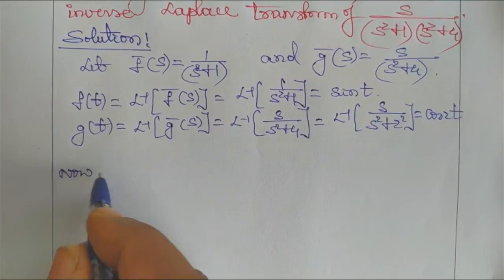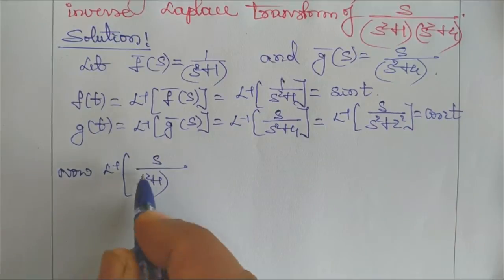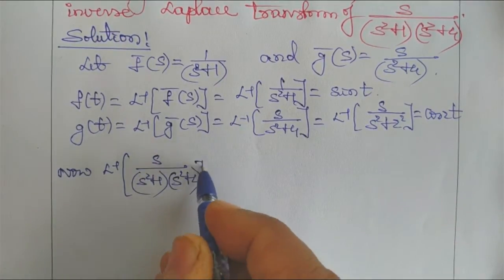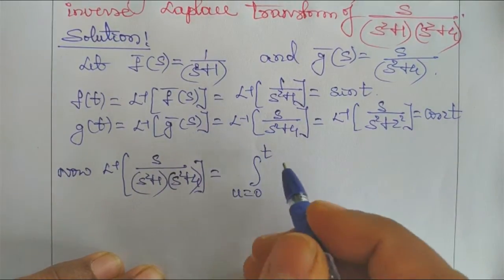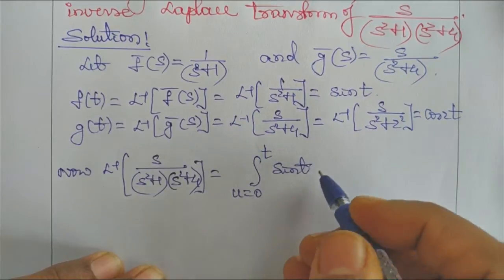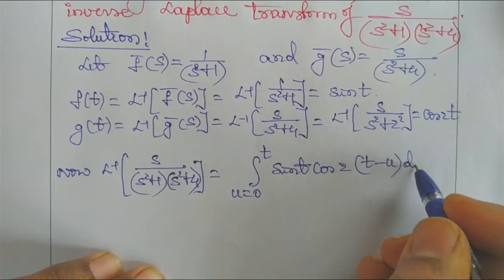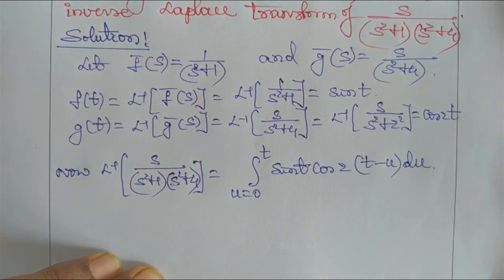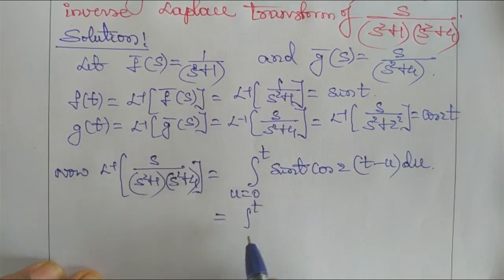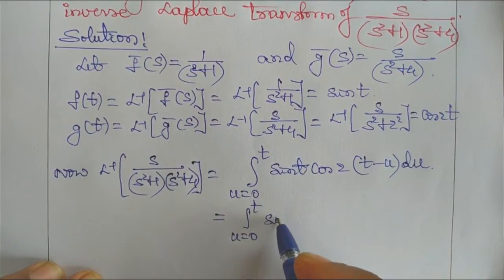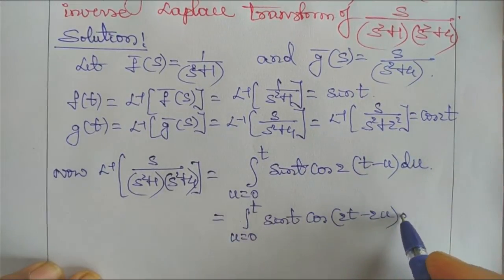Now, L⁻¹ of S/[(S² + 1)(S² + 4)] equals the convolution integral from U = 0 to T of sin(U) · cos(2(T − U)) dU.